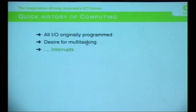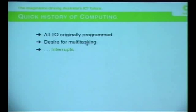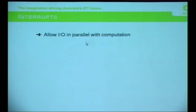But people wanted to do things two at a time. They suddenly realized that they got these multi-million dollar machines, which were sitting around doing nothing except waiting for a slow serial port to come back at 110 baud and say my character's ready. So they decided to invent this thing called interrupts, which is: when the device wants some attention, it tells the processor, hey, look at me, come and talk to me. These things allow IO to happen in parallel with computation.